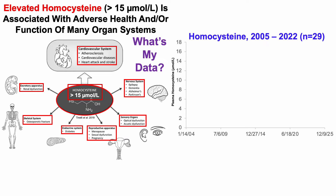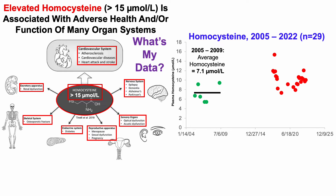So what's my data? I have homocysteine data that goes back to 2005, so I have 29 blood tests over that span. When I first started tracking from 2005 to 2009, I tested six times over that time period, and my average homocysteine was 7.1 micromolar — relatively youthful values when I was in my early to mid-30s. Then I took about eight years off from measuring it because it's not commonly measured on a standard chem panel, at least in the United States.